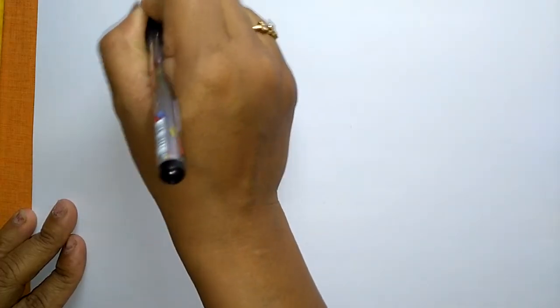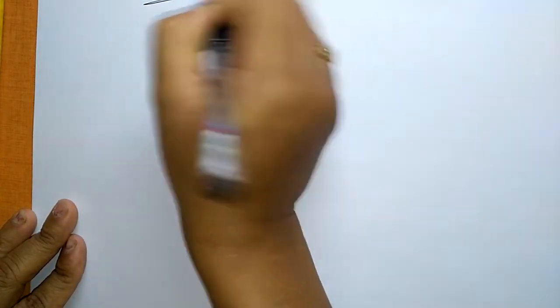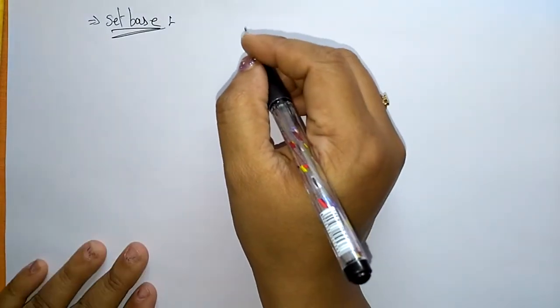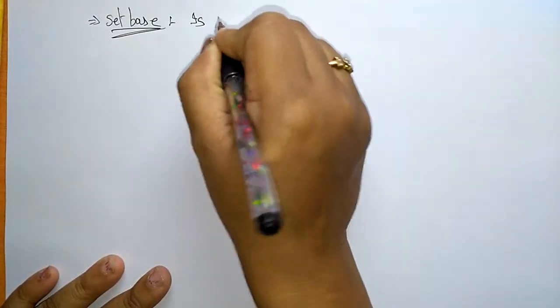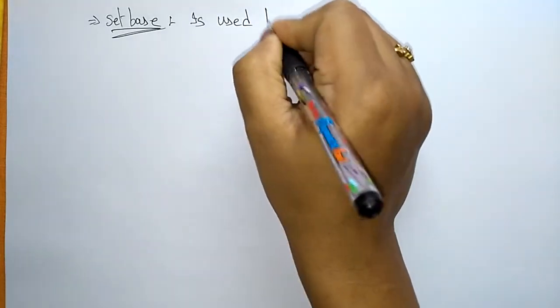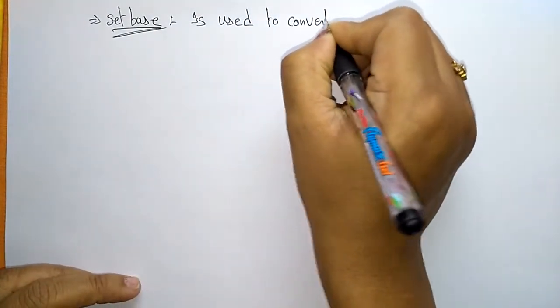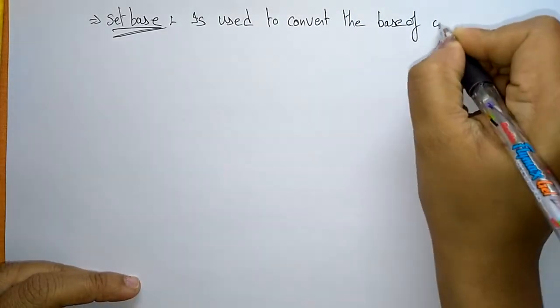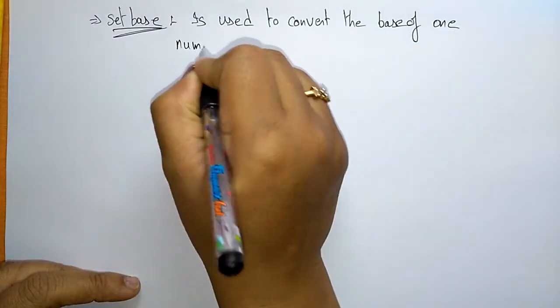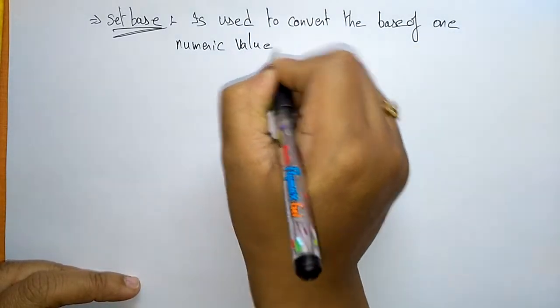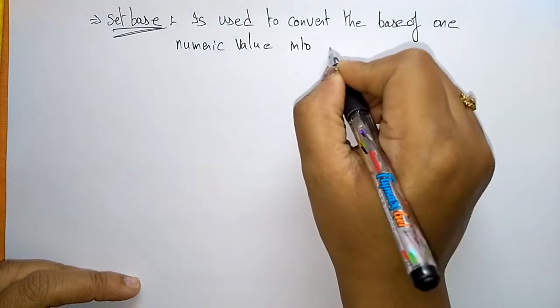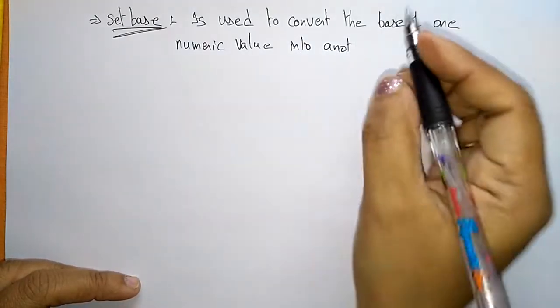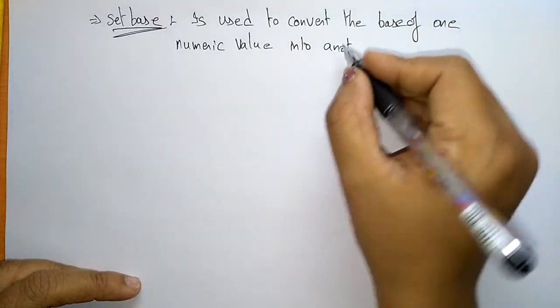The next manipulator is setbase. The setbase manipulator is used for converting the base of one numeric value into another base. So setbase is used to convert one base value to another base value.